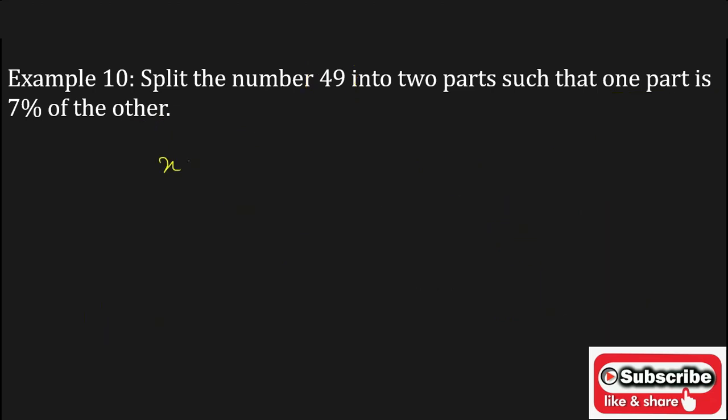x equals 100 upon 100 plus 7 into 49. It will become 100 upon 107 into 49 which is equal to 4900 upon 107 which gives you the answer 45.79.